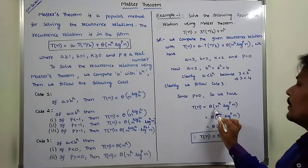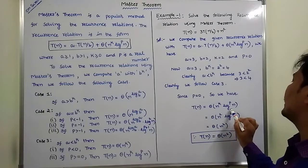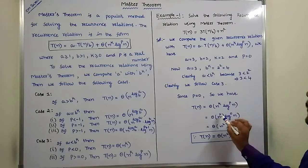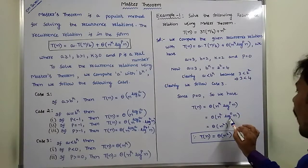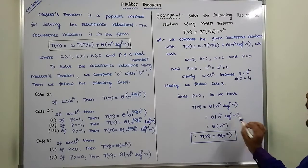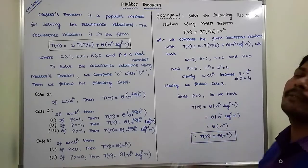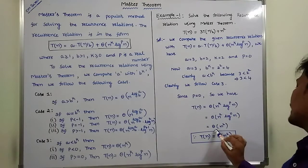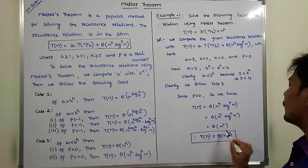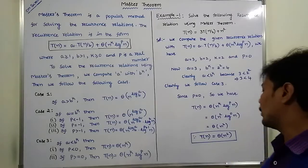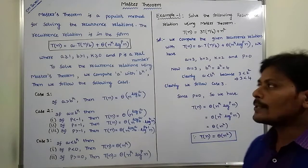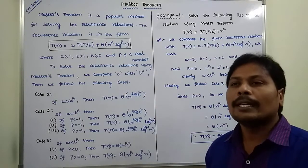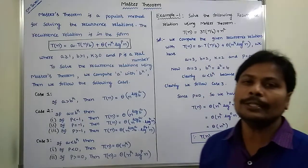Therefore T(n) = Θ(n^k · log^p n). Substituting k equals 2 and p equals 0: T(n) = Θ(n² · log⁰ n) = Θ(n² · 1) = Θ(n²). So the time complexity T(n) equals Θ(n²). In this way we find the time complexity using Master Theorem. Thank you. In the next video, we go for example 2.